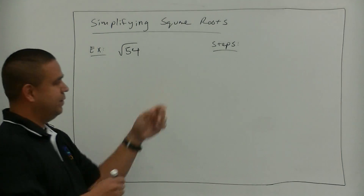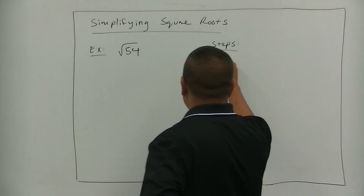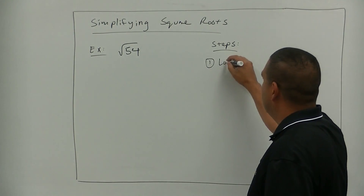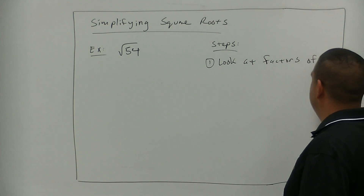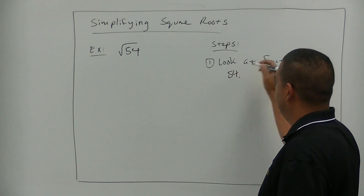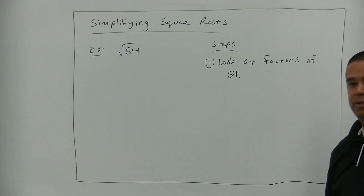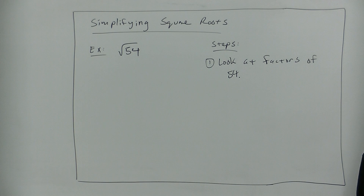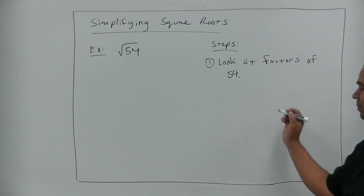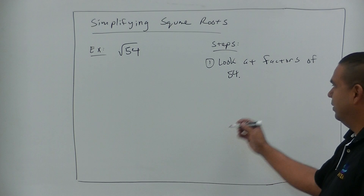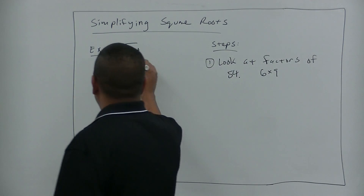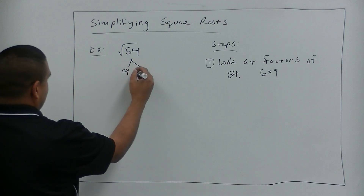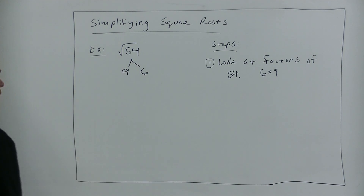The first step is to look at factors of 54. What two numbers would multiply to give us 54? So we come over here and we say, well we know 9 times 6 is 54.